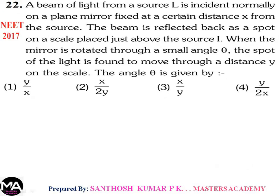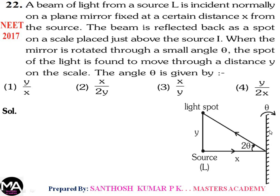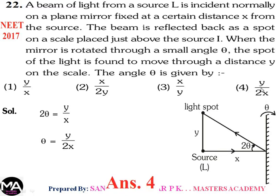Question 22: A beam of light from source L is incident normally on a plane mirror at distance x. The beam reflects back as a spot on a scale above the source. When the mirror is rotated through small angle θ, the spot moves distance y on the scale. From the figure, when mirror rotates by θ, the reflected beam rotates by 2θ. Therefore 2θ = y/x, giving θ = y/2x. Option 4.